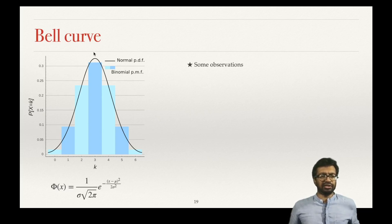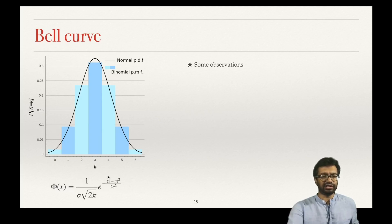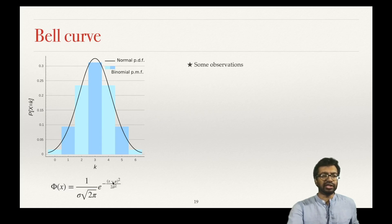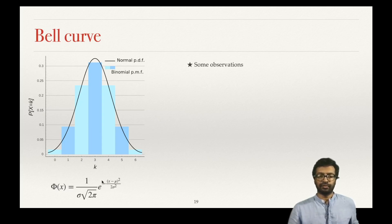Why is that? From the equation: when is f of x the greatest? The exponent is e raised to a negative number. To maximize f of x, the exponent should be as close to zero as possible. Since x minus mu squared is always positive and sigma squared is always positive, this term is zero only when x equals mu, making e raised to 0 equal to 1. So the greatest value of this function happens when x equals mu.